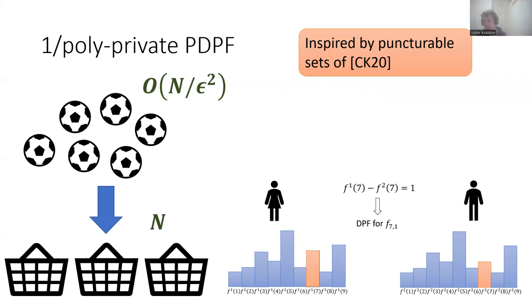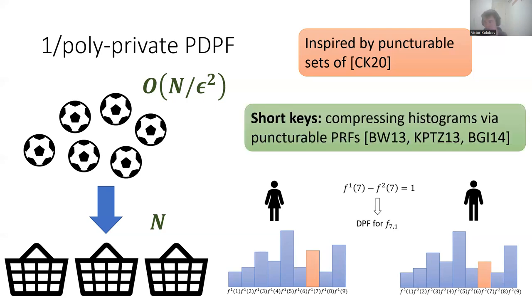Now note that the difference between these two histograms gives us the DPF over the integers. And in this work, we show that these histograms can be compressed using privately puncturable PRFs. This is, in some sense, in similar manner to how puncturable sets can be compressed using puncturable PRFs.